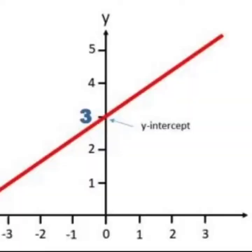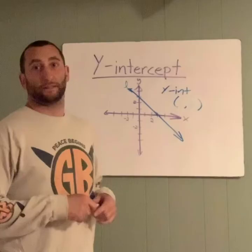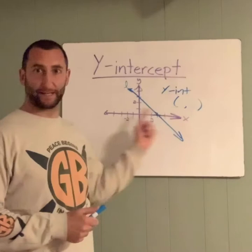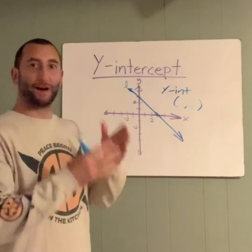Let's do the y-intercept. Remember what we did with the x-intercept — we looked for where the line crossed the x-axis. We're going to do the same thing, except since it's a y-intercept, we're going to look for where the line crosses the y-axis. Here's the y-axis, here's our line L cutting across right here.